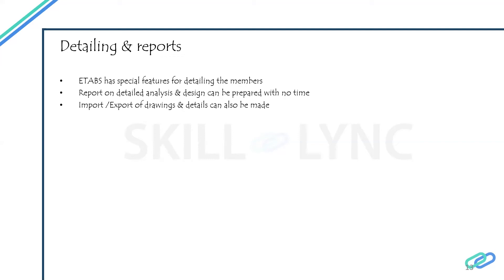This is a special feature of ETABS — it prepares the complete report from the first page to the conclusion in a readable PDF format. A single file shows the structure from scratch to finish, making it easy for anyone — from the design team, execution team, or project management — to read drawings and understand detailing in a systematic way. The software also supports import and export in DXF, DWG, and other formats for reporting.